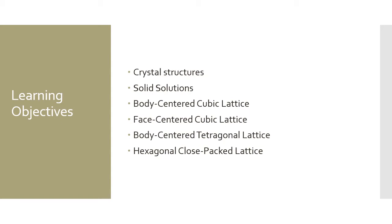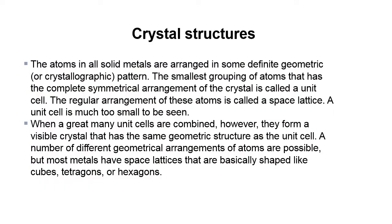Crystal structures. The atoms in all solid metals are arranged in some definite geometric or crystallographic pattern. The smallest grouping of atoms that has the complete symmetrical arrangement of the crystal is called a unit cell.